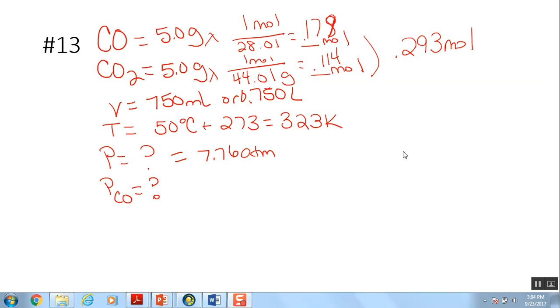Let's continue. Let's look at 13. So again, I've written down some information that we know. 13 and 11 are very similar to each other. We're given some masses, a mass of two gases that are in a sample. We've got carbon monoxide, we've got carbon dioxide. It tells us we have five grams of each. So I went ahead again and converted them to moles.